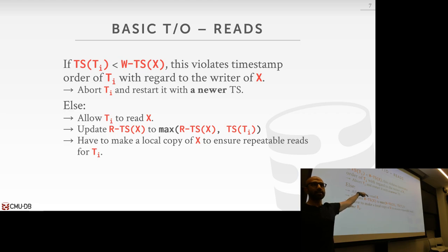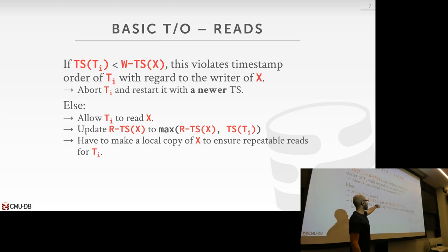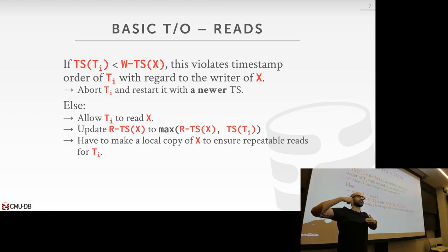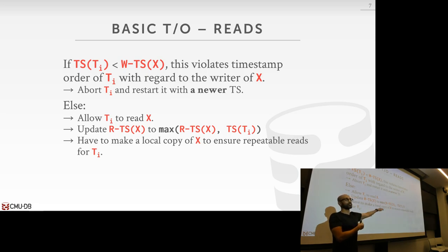If the read invariant is satisfied, you're allowed to perform the read. You then update the read timestamp for the tuple to the maximum of the current read timestamp and your own timestamp. You take the maximum because timestamps must be monotonically increasing — a newer transaction could have already updated the read timestamp, and you can't set it back to an older value.